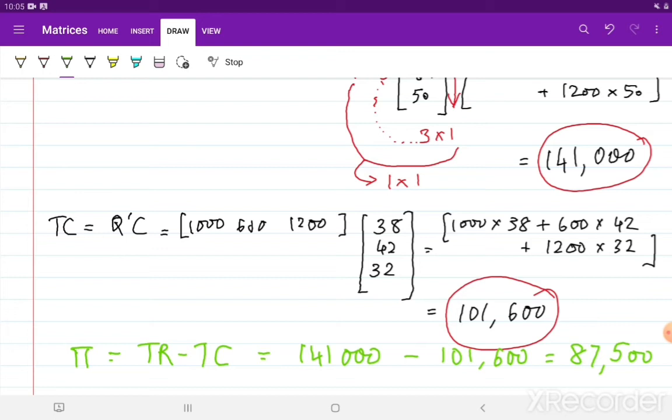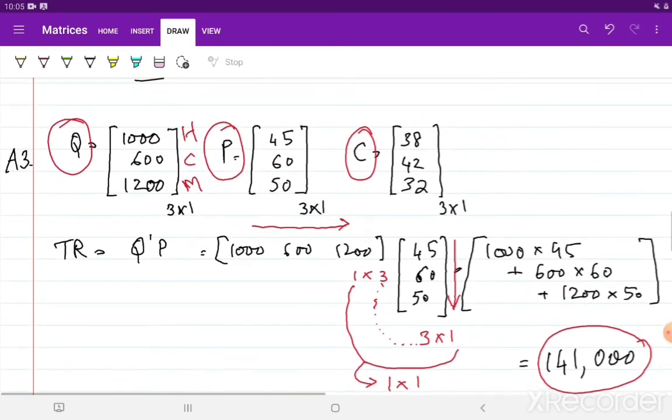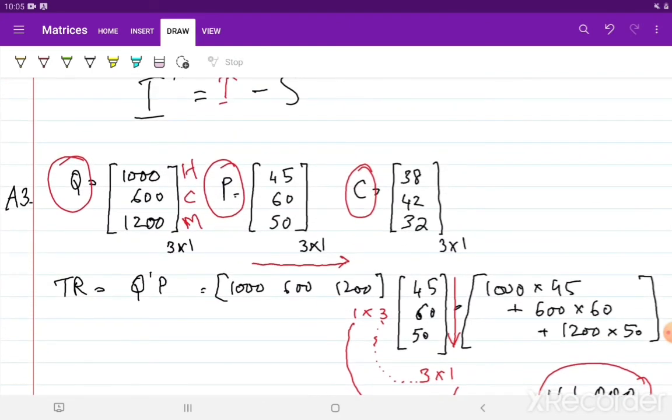So things that you have to pay attention to: the way you arrange the matrices so that the multiplication can happen successfully. Remember, I can also multiply if you look at the matrices here. If you look at the quantity and price matrices here, I can also multiply Q with P transpose.